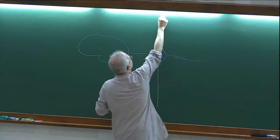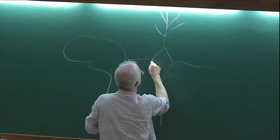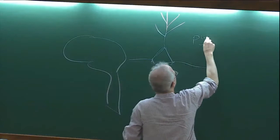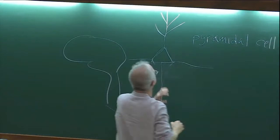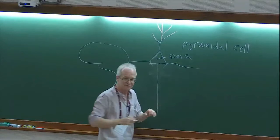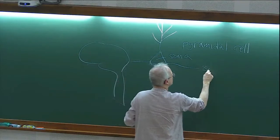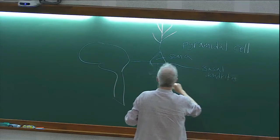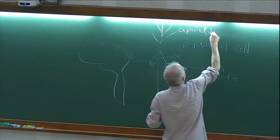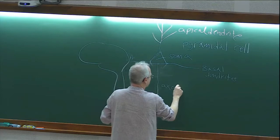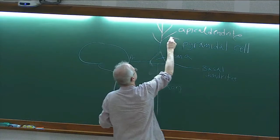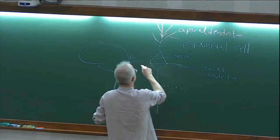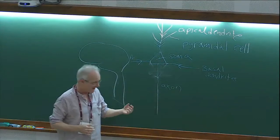I'm going to draw a particular kind of neuron that is very common. This is called a pyramidal cell, and it consists of several parts. This is the soma. These guys are called basal dendrites, right here. And this is the apical dendrite. And this is the axon. Information flows in this direction from the dendrites into the soma and then out the axon.